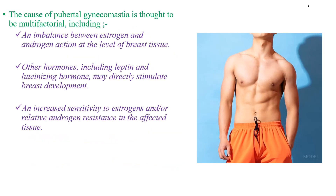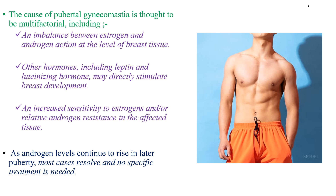The cause of pubertal gynecomastia is thought to be multifactorial, including an imbalance between estrogen and androgen action at the level of breast tissue. Leptin and luteinizing hormone, which rise during puberty, directly stimulate breast development, along with increased sensitivity to estrogen and relative androgen resistance in affected tissue. As androgen levels continue to rise in later puberty, most cases resolve and no specific treatment is needed.